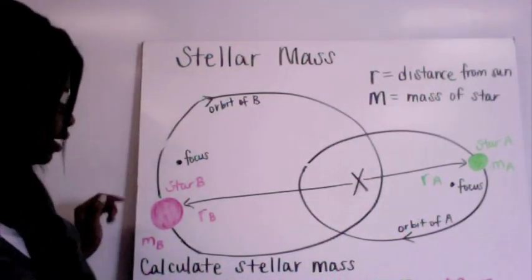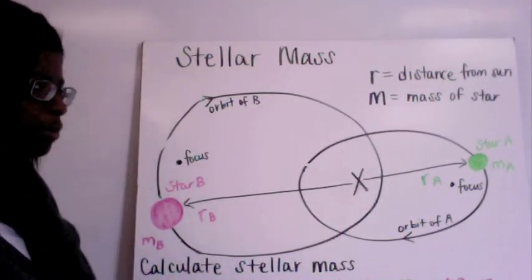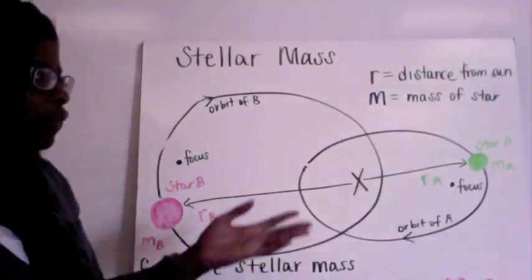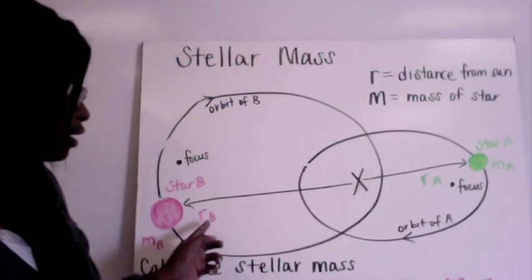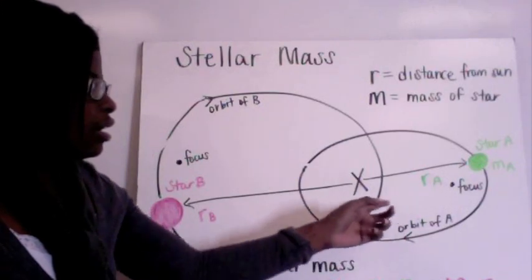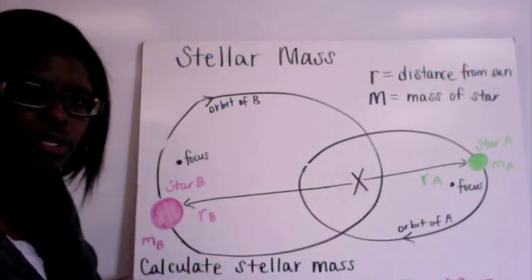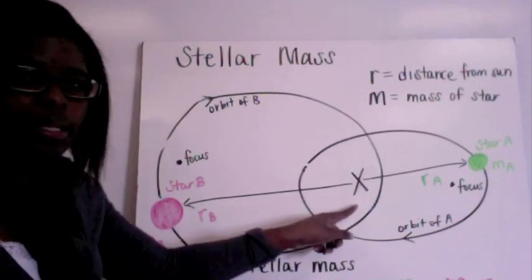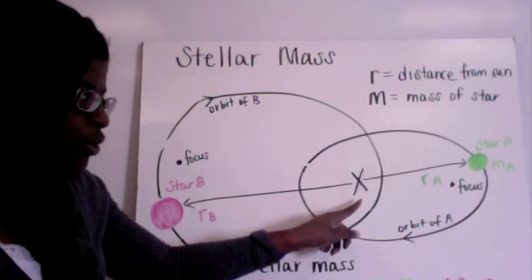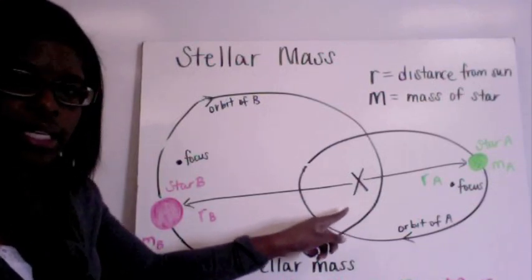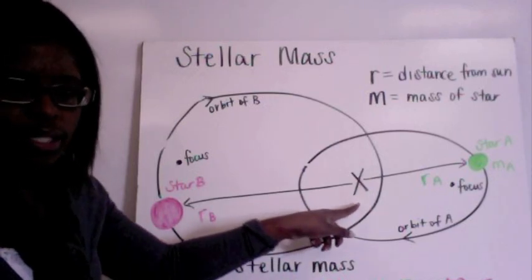So we have our foci here, we have star B this is MB which is going to be the mass and then MA for the mass of star A and then we have our radii here or the distance from the Sun. So in order to calculate the stellar mass the reason why you need to know where the barycenter is this is the barycenter here.